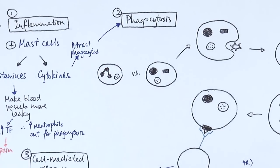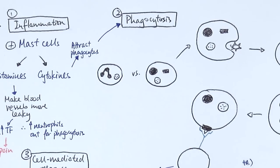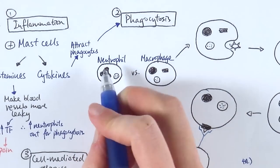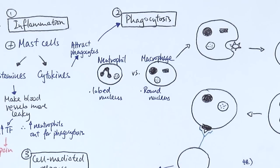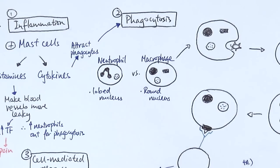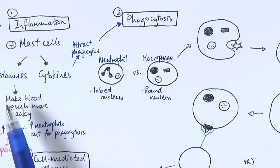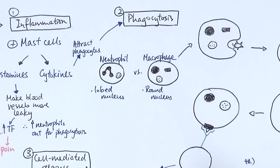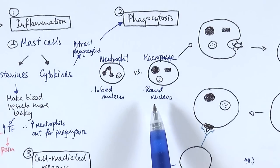There are two types of phagocytes — anything ending in -cyte refers to a cell. We have neutrophils and macrophages, both of which do phagocytosis, but they have distinctive structural differences. Neutrophils have a lobed nucleus and macrophages have a larger round nucleus. This means neutrophils are able to squeeze through gaps in blood vessel walls to leave the bloodstream and directly engulf pathogens at infected tissues, whereas macrophages mainly stay in the bloodstream.